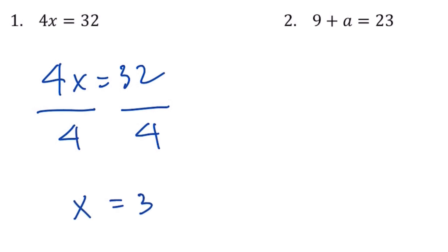Question number 2: we have 9 plus a equals 23. We need to get rid of this first, so since it's a positive 9, I'm going to subtract 9 from both sides, and that way we're left with a equals 14.